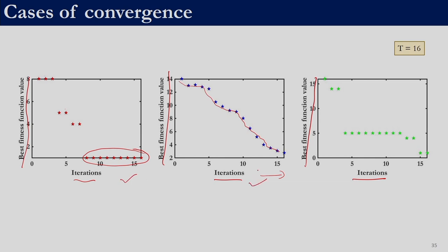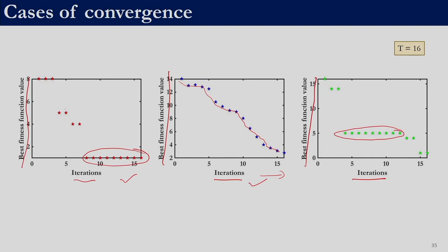You can also end up in cases like the third one, wherein for a substantial number of iterations there is no improvement in the fitness function value — no observable improvement — but afterwards it starts decreasing. So it is not correct to fix the number of iterations and take whatever solution we get at the end. It is necessary that we look at the convergence plot and decide whether the algorithm has converged or not.